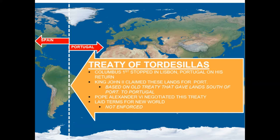This laid the terms for the new world. However, the Pope doesn't have an army, so it wasn't going to be enforced. The whole point of the Treaty of Tordesillas was to figure out a way that Portugal and Spain — and really Europe in general — were not going to have conflict in the new world, because there had been so much war happening in the old world. They were like, let's try to avoid that.